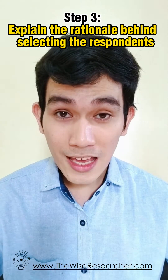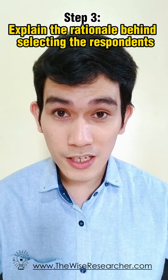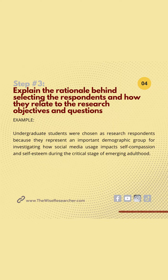Step number three: explain the rationale for the selection of the research respondents. For example, undergraduate students were chosen as research respondents because they represent an informed and important demographic group for investigating how social media usage impacts self-compassion and self-esteem during the critical stage of emerging adulthood.